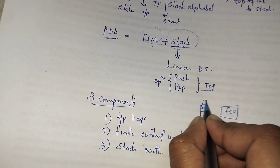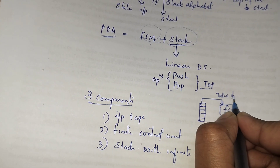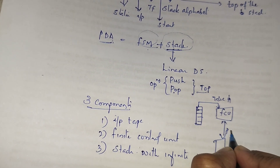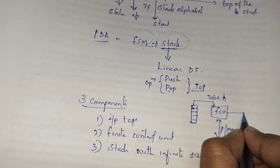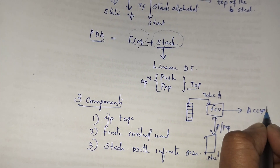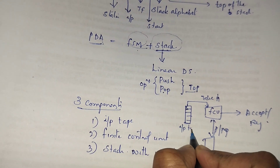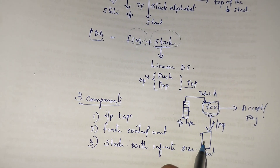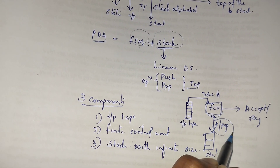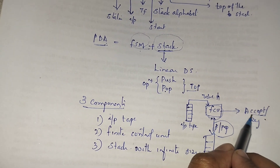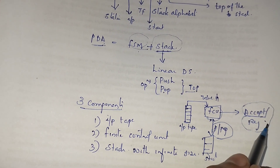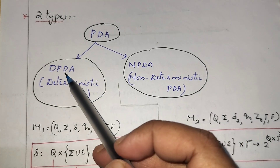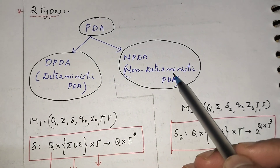There is an input tape and a finite control unit that takes the input, and there is a stack which performs push and pop operations. The machine then decides whether the string is accepted or rejected. From the input tape we take the input, the finite control unit processes it, the stack performs push and pop operations, and finally the machine decides whether the string is accepted or rejected.